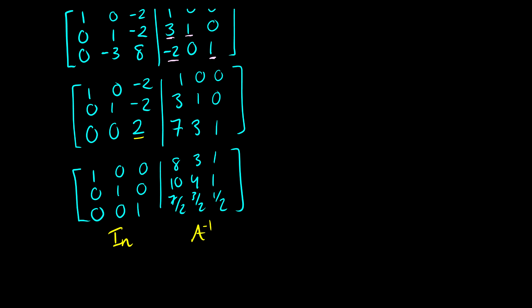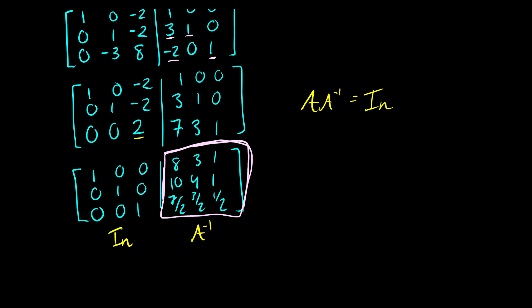You can check this by multiplying A and A inverse — you should get the identity matrix back, so you can double-check your answer this way. But for the sake of keeping the video short, this is your final result, and you can check this on your own. If you have any questions, please leave them in the comments below and I will answer them as soon as I can.